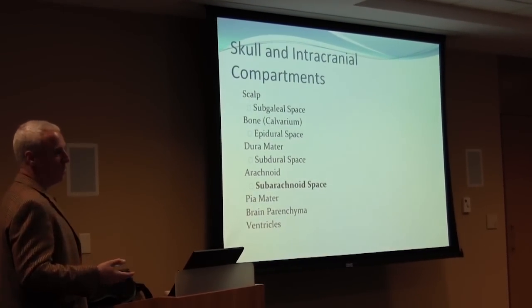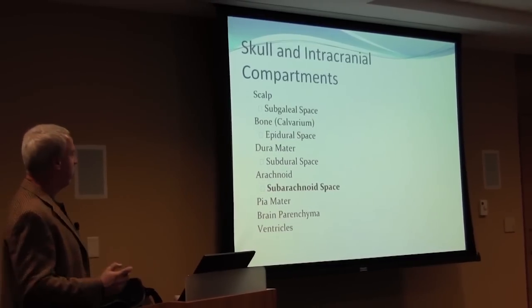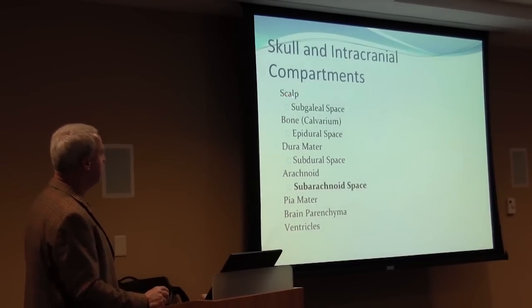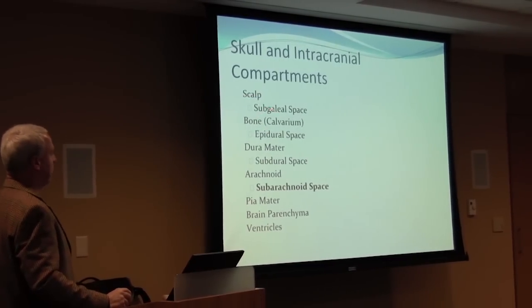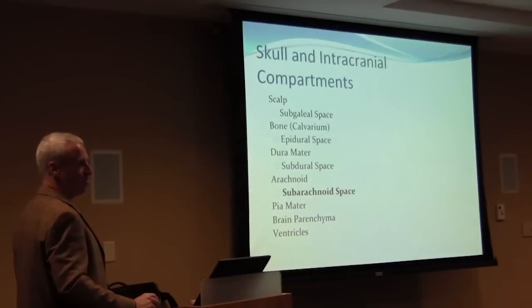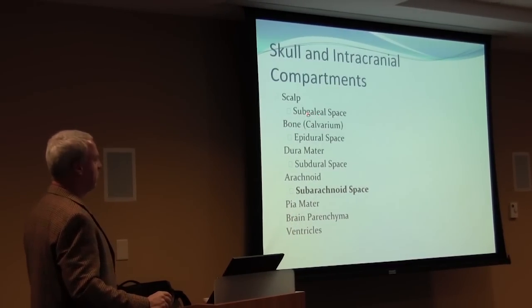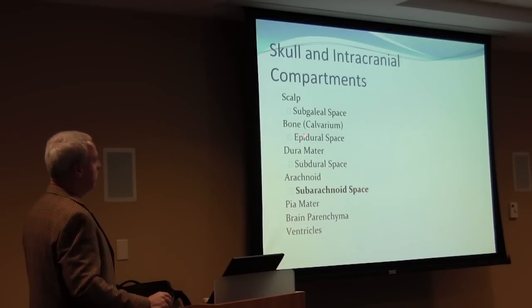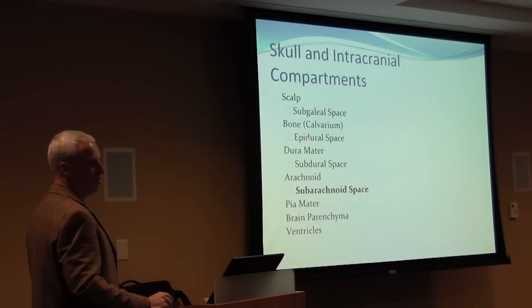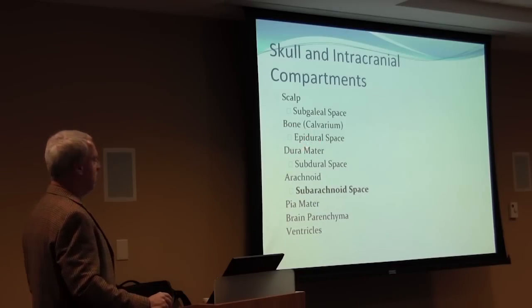Let's talk about the skull, because that's important so we understand where these aneurysms are. We have the scalp. Underneath the scalp, we have the galea, which is the inner firm layer of the scalp of connective tissue. Underneath that is the subgaleal space. Beneath the galea is the bone. Underneath the bone is the epidural space, because it's above the dura mater. Then we run into the dura mater, which is the sac-like covering of the brain.